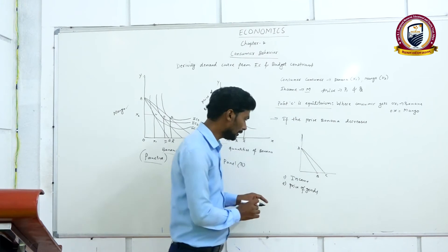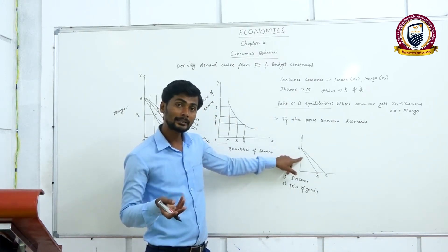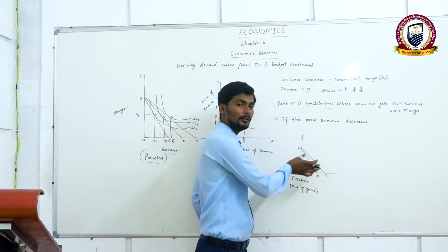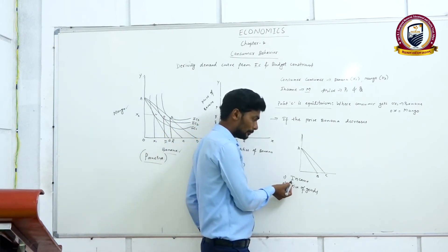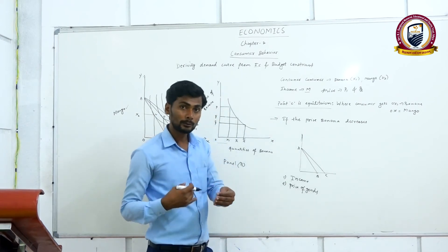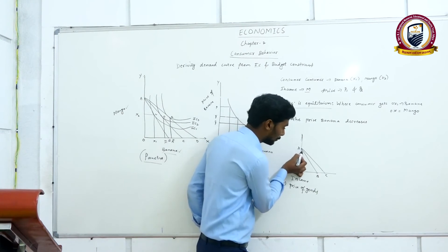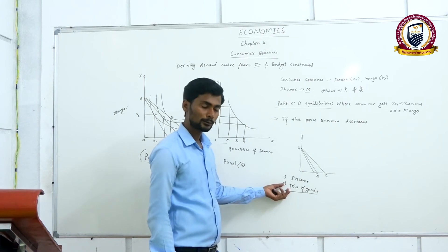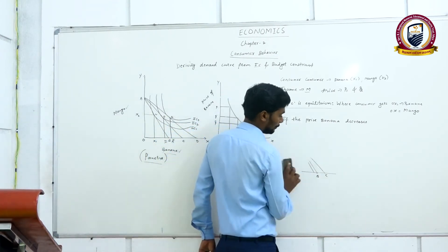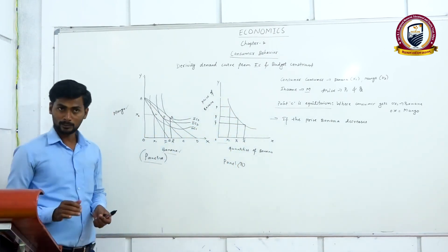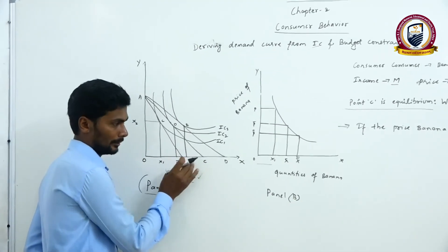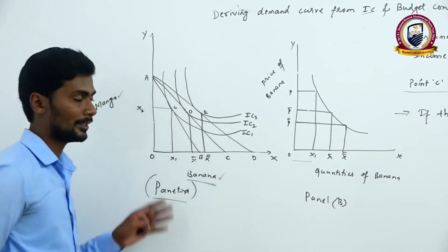These two reasons — consumer income and price of goods — lead to a change in the budget line. If consumer income increases, the budget line shifts upward; if income decreases, it shifts downward. Similarly, when the price of goods increases, the budget line shifts downward. Here, the budget line shifted upward because the price of banana decreased.